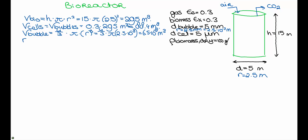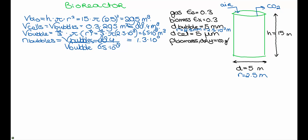It's simply dividing — the number of bubbles N_bubbles equals the total volume of bubbles divided by the volume of one bubble, which is 88.4 divided by 6.5 times 10 to the minus 8. If you calculate this carefully you will find that the number of bubbles in the bioreactor is 1.3 times 10 to the 9.